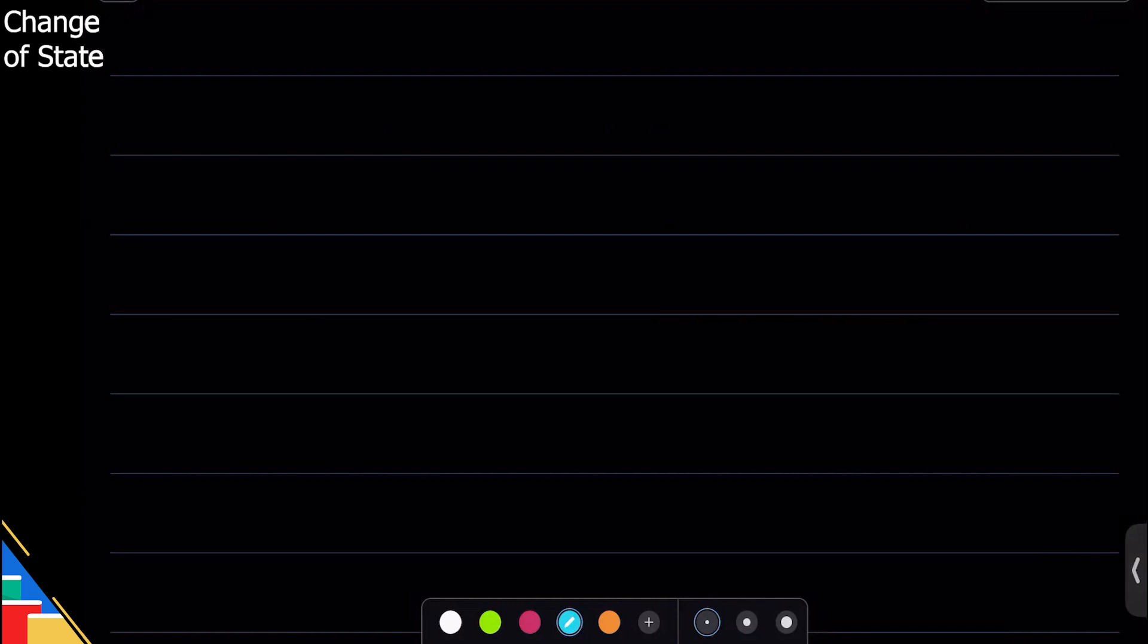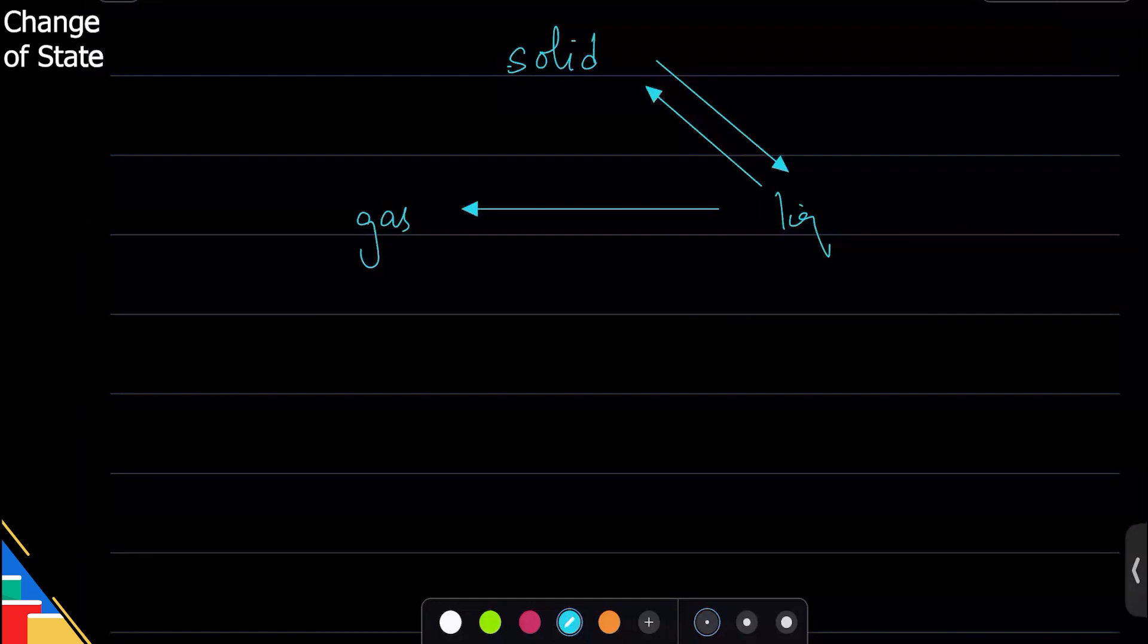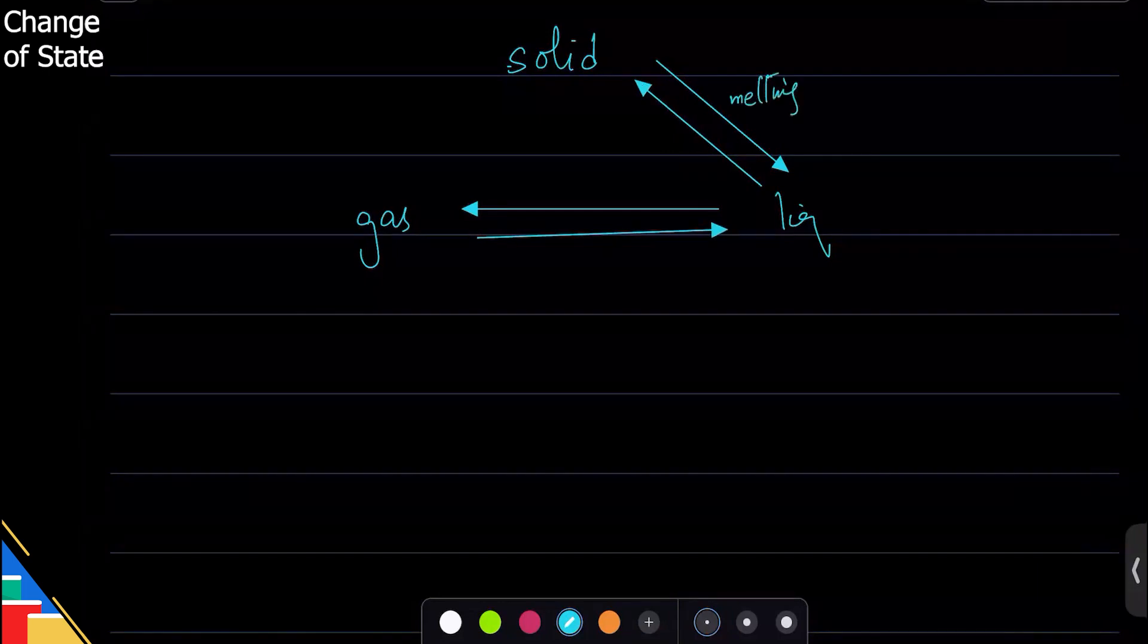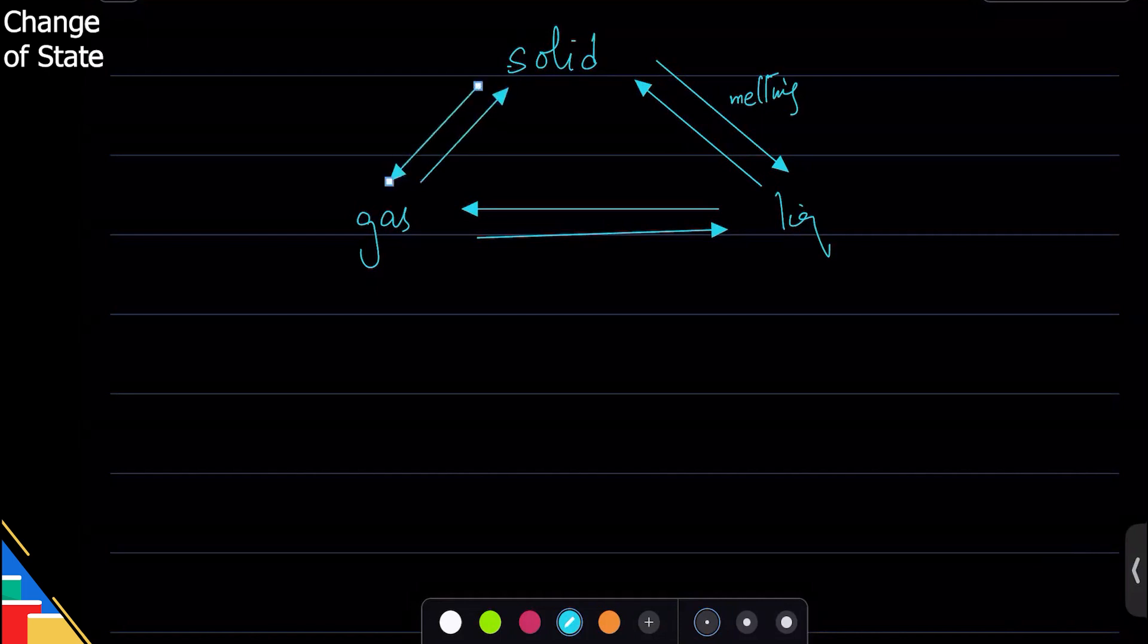Solid can change to a liquid which can change to a gas. What's the process of solid changing to a liquid? Melting, exactly. You can change a solid to liquid through melting, and liquid to solid goes by what process? Freezing, exactly.